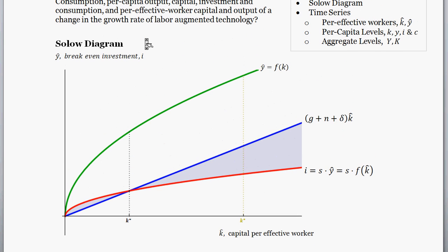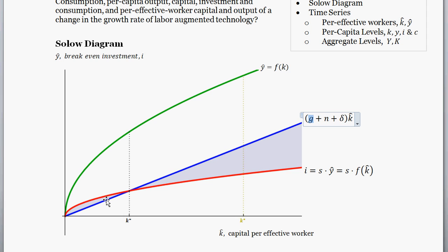Turning toward the SOLO diagram: what happens if technology growth increases? Technology growth is marked by g — that's the growth rate of labor-augmenting technology; n is population growth; d is depreciation. Mathematically, if g goes up then the slope of the break-even investment line shifts up, which is going to push the steady-state level of capital per effective worker down.